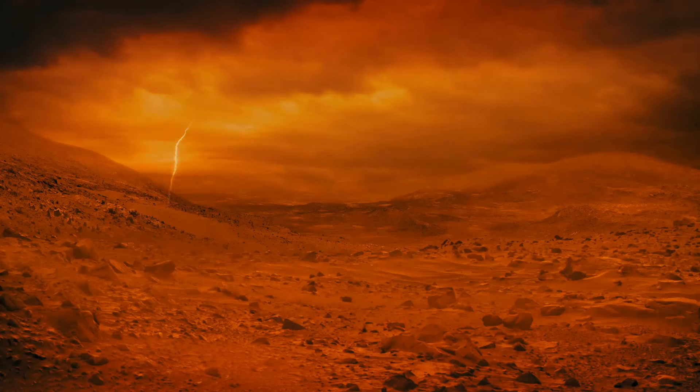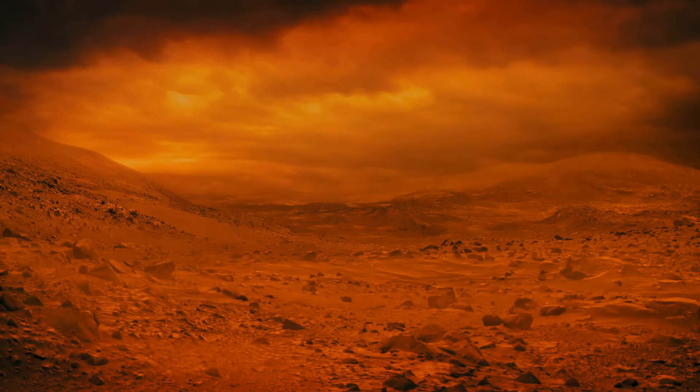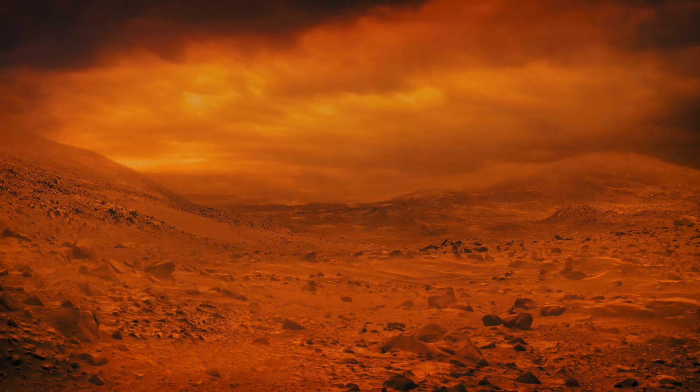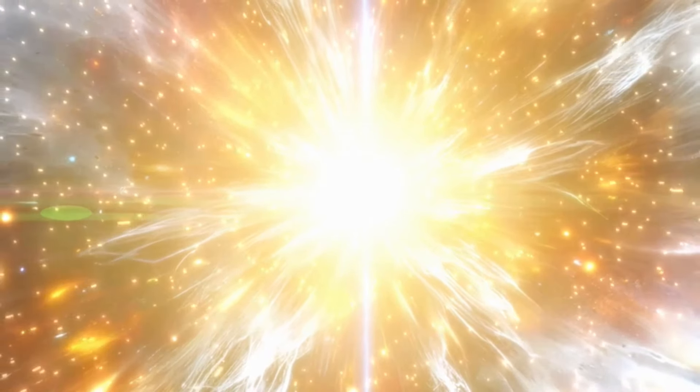While a supernova within a certain radius can indeed wreak havoc on a solar system, Betelgeuse is far enough that we're in the clear. Supernovae are known to release intense radiation, including gamma rays, which can strip away a planet's atmosphere and cause mass extinctions. However, at 640 light-years away, Betelgeuse's explosion will be a safe distance from us, sparing Earth from any catastrophic consequences.